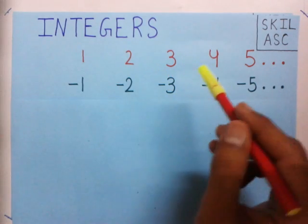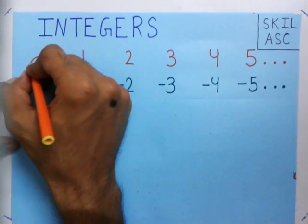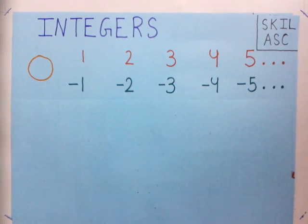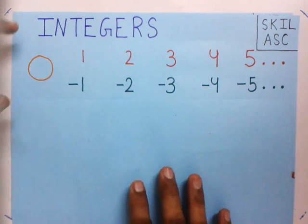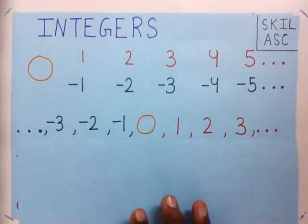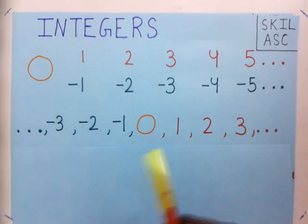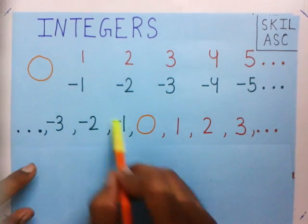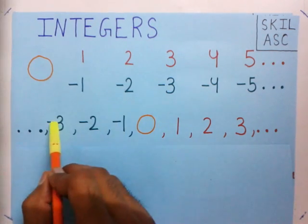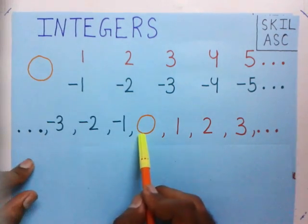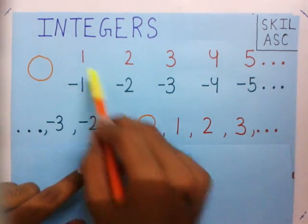This is a new list of numbers. Now I have one more number which is a very special number — you see 0. Now I will write all these numbers in a single list. I have written the negative numbers in the opposite direction: minus 1, minus 2, minus 3, minus 4, minus 5 and so on, then 0, then 1, 2, 3 and so on.